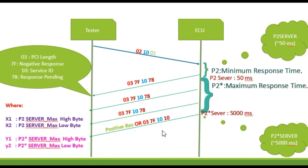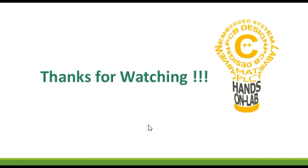Suppose within 5000 milliseconds the ECU processes the request, then the tester will get a positive response; otherwise the tester will get NRC 10. Hope you understand P2 and P2 star timer. Thanks for watching.